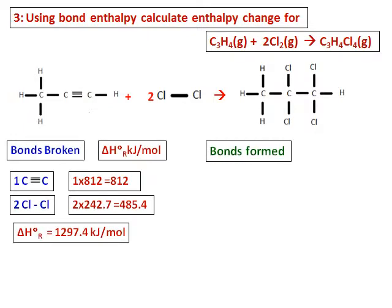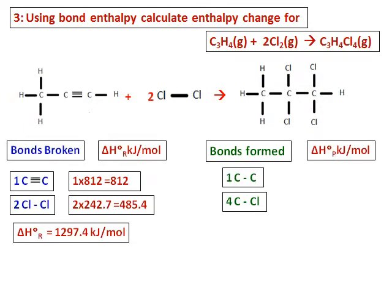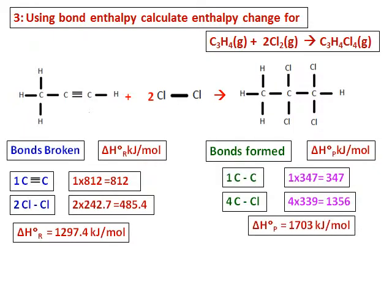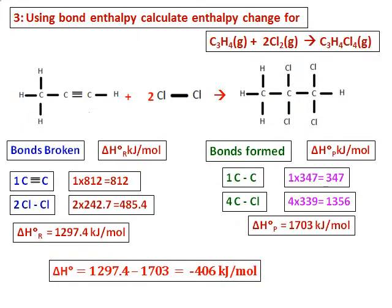Now let's see the bonds form. The number of bonds that is formed is, I get one carbon-carbon single bond and then I also get 4 carbon-chlorine single bonds. And writing the enthalpy change for all of them, I get 347 for the carbon-carbon single bond and for the carbon-chlorine single bond, it is 4 times 339. So calculate the delta H of the product. We use the formula, delta H of the reaction is reactant minus product and that comes as negative 406 kilojoules per mole.